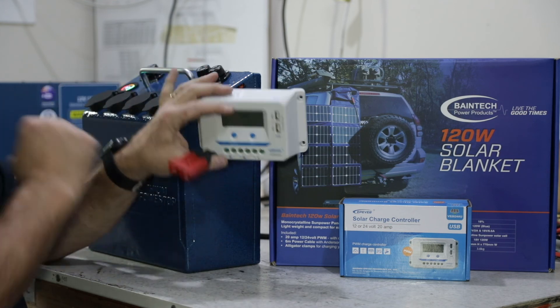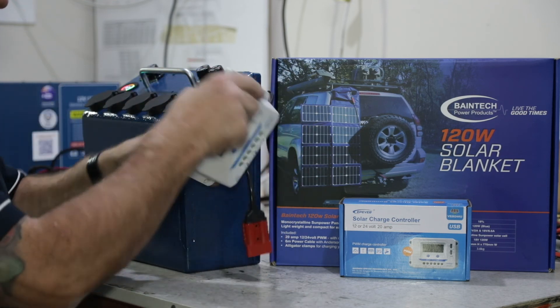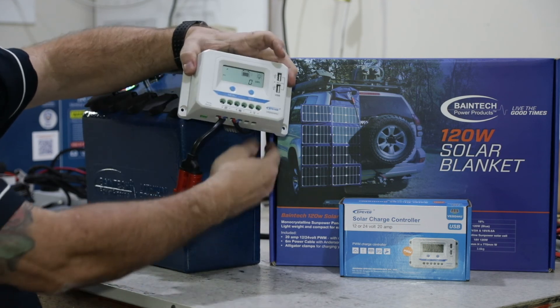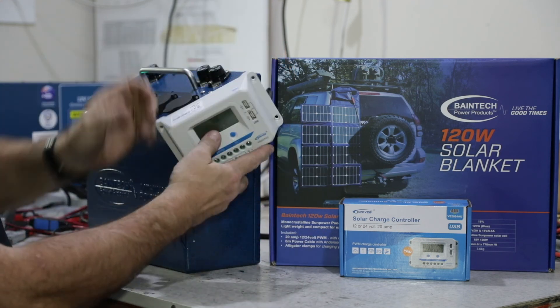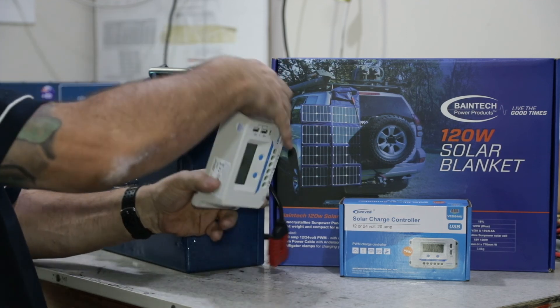There's a couple of little USB sockets you can charge via the solar charger. Obviously you can do that straight off the unit here as well. So at the same time we've got solar going in and we've got our loads like the fridge connected and going out.